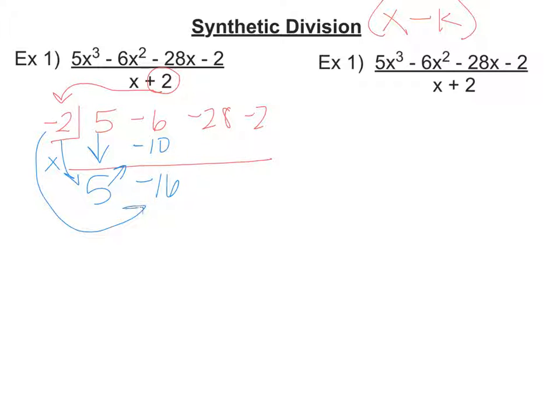So I have negative 2 times negative 16, which is a positive 32. Then you add. 32 minus 28 is going to be 4. Do it again. Multiply to give you a negative 8. Negative 8 and negative 2 is a negative 10. So you just go through there.